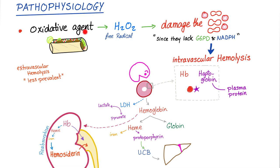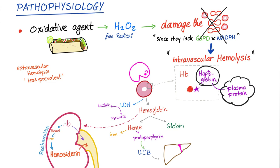Pathophysiology: an oxidative agent — such as a drug, an infection, or a falafel sandwich — generates free radicals. These free radicals damage red blood cells because you lack G6PD and NADPH, so you cannot protect them and they get destroyed. This is intravascular hemolysis. Hemoglobin is released from the destroyed red blood cells. A plasma protein called haptoglobin binds to the released hemoglobin and is consumed, so the plasma level of haptoglobin is reduced.